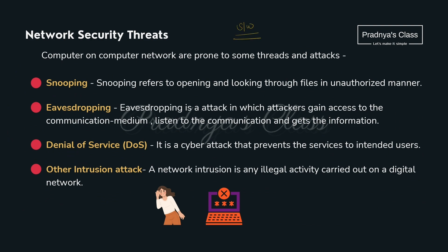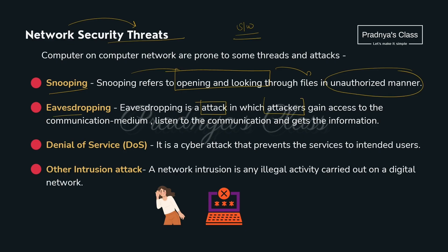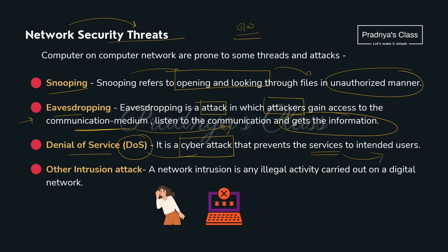Now we will study some network security threats. The first is snooping — opening and looking through files in an unauthorized manner. The second is eavesdropping — an attack in which attackers gain access to the communication medium, listen to the communication and gather personal or confidential information. The third is Denial of Service, or DoS — a type of cyber attack which prevents services to the intended users. Another is intrusion attack — an illegal activity carried out in a digital network. Be alert and careful while using the internet; do not share personal, banking or credit card information with any unknown person.